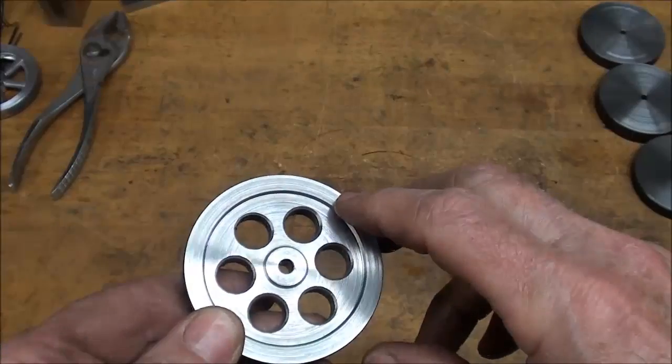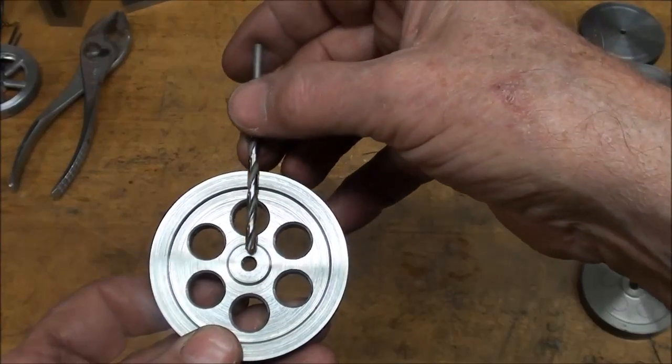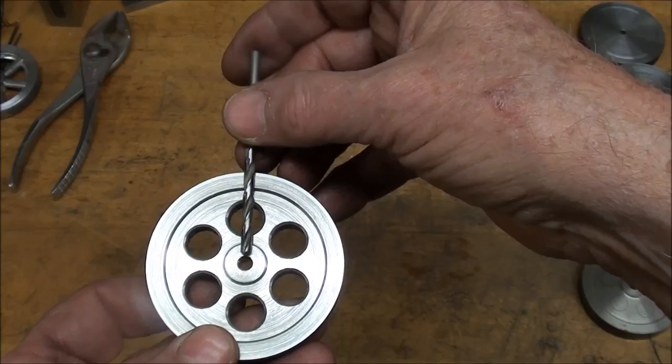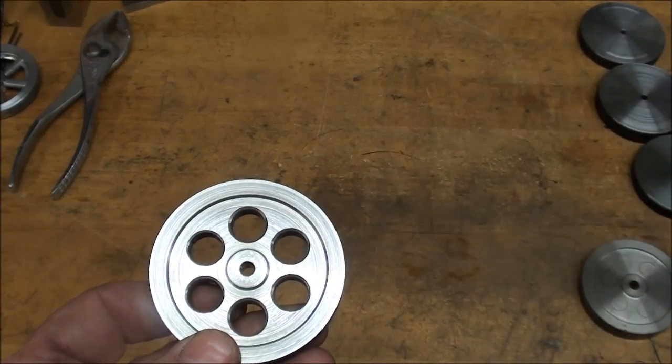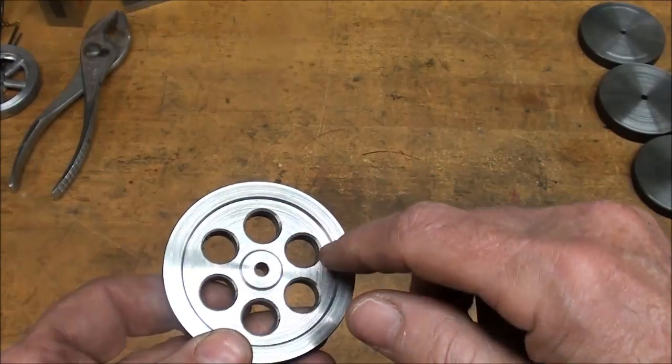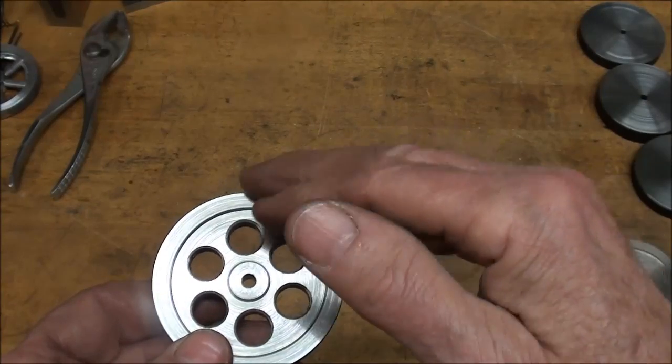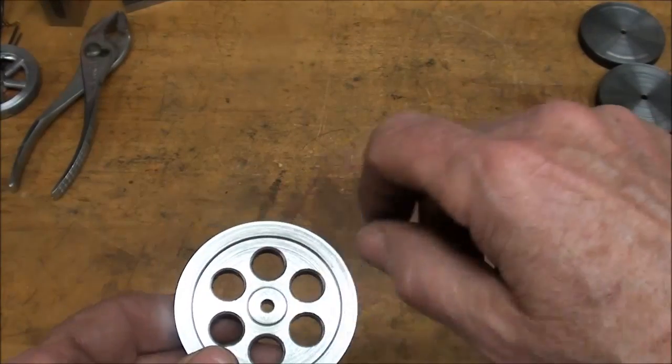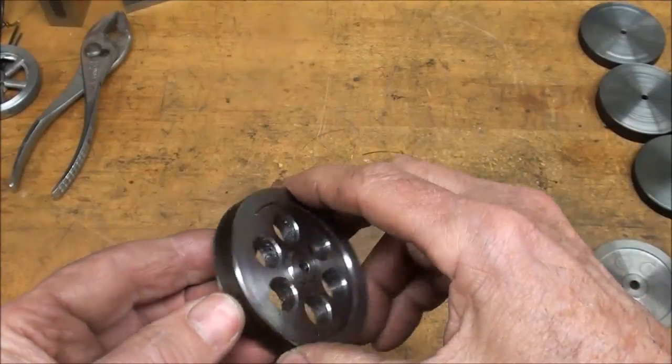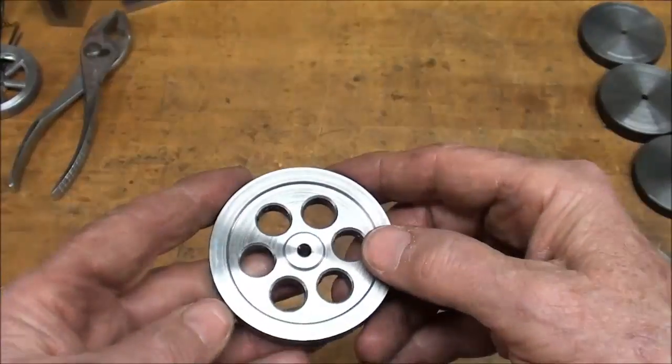Holes are countersunk. All I need now is a set screw and that could go right through one of the holes like that. Probably about an 8-32 set screw for a 3-sixteenths hole. Now you can dish this out much more if you want. Remember the whole idea with a flywheel is to get the weight out toward the outside so we don't need the weight here at all.